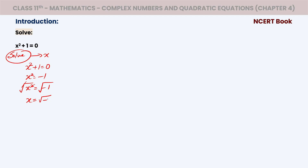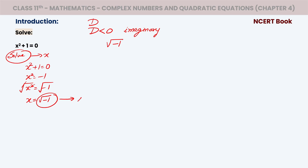The value of x comes out to be √(−1). According to our mathematics, if we have a negative number under the root, we call it an imaginary number. So this imaginary number — we denote this part as IOTA.